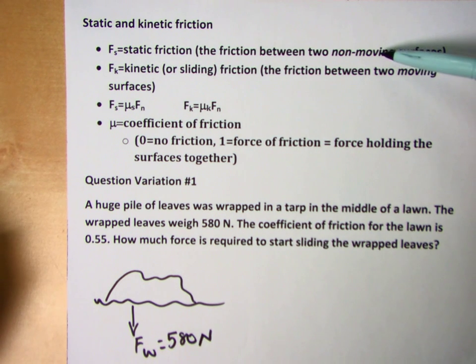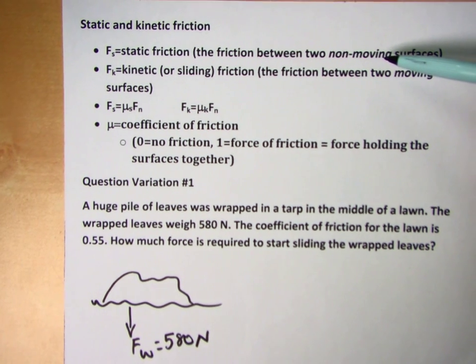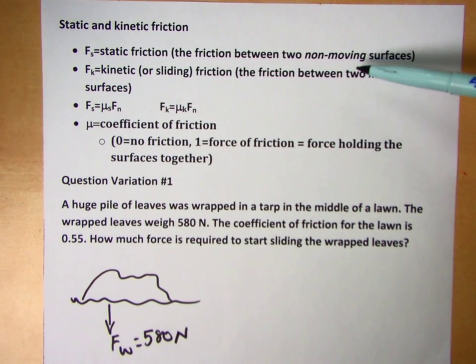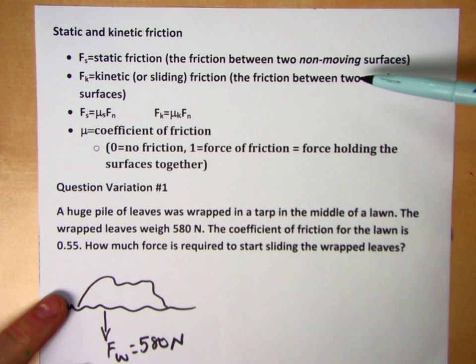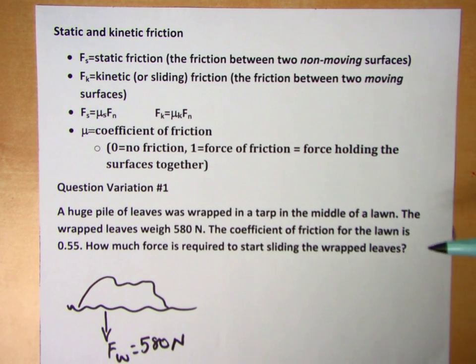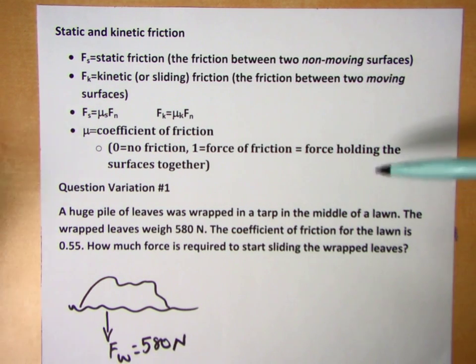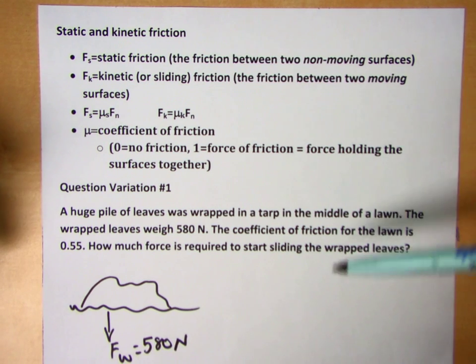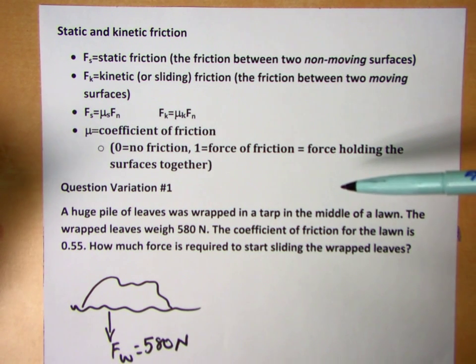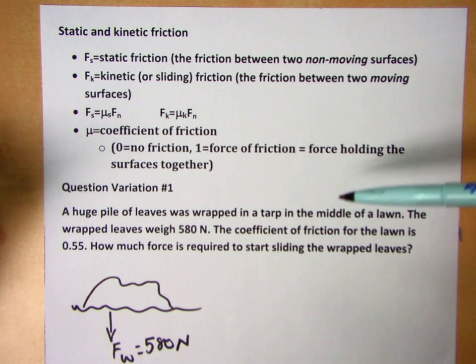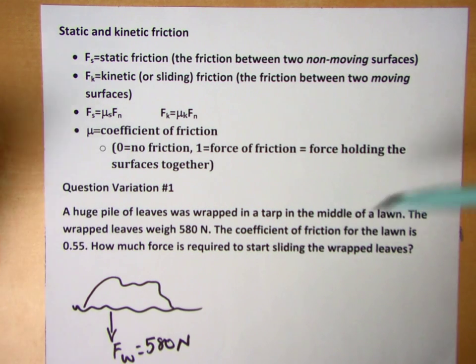We have static friction, which is the force between two non-moving surfaces. And we have kinetic friction, which is the force between two moving surfaces. So static friction is the force we have to overcome to get an object moving from rest. And kinetic friction is the friction we have to overcome to keep a moving object moving.